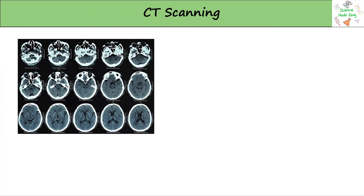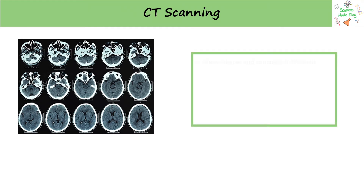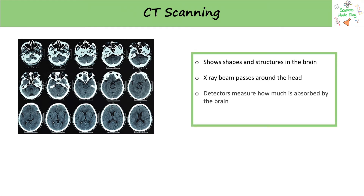CT scans are used to show the shapes and structures in the brain. An x-ray beam passes around the head and detectors measure how much is absorbed by the brain, and that information is then used to build up images of the brain.